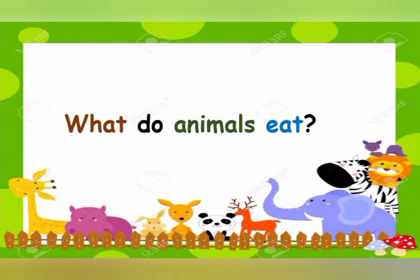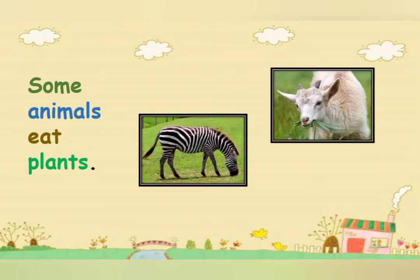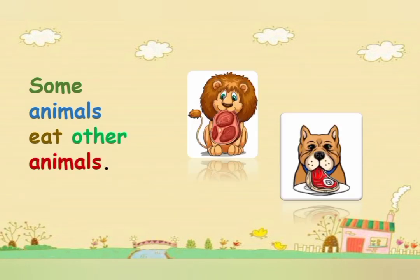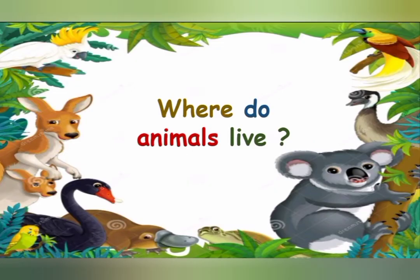The next thing which we are going to learn is what do animals eat? جانور کھاتے کیا ہیں؟ Students, some animals eat plants like zebra and goat. Some animals eat insects and worms like frog and sparrow. Some animals eat other animals like dog and lion.